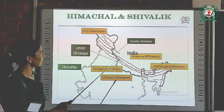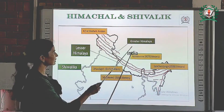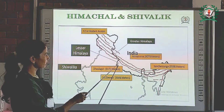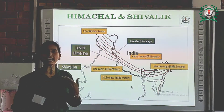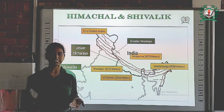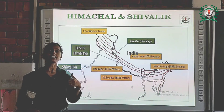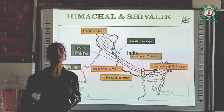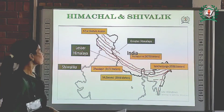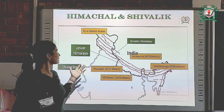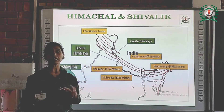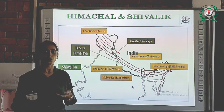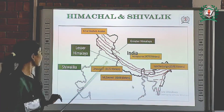As you can see here, this range is known as Greater Himalayas and this range is known as Lesser Himalayas. As we have heard about many hill stations like Shimla, Nainital, and Mussoorie — these hill stations are all located here. So this range is basically a picnic spot or holiday spot for us. Next is Shivalik.